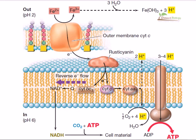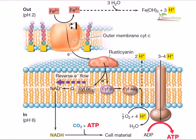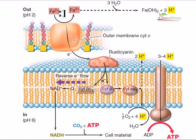Welcome back friends. In this video tutorial we'll be talking about the electron flow in the photosynthesis or the light reaction of iron-oxidizing bacteria. Chemolithotrophic iron-oxidizing bacteria, as you can see in this picture, can transfer the electron from iron — shown here as Fe2+.